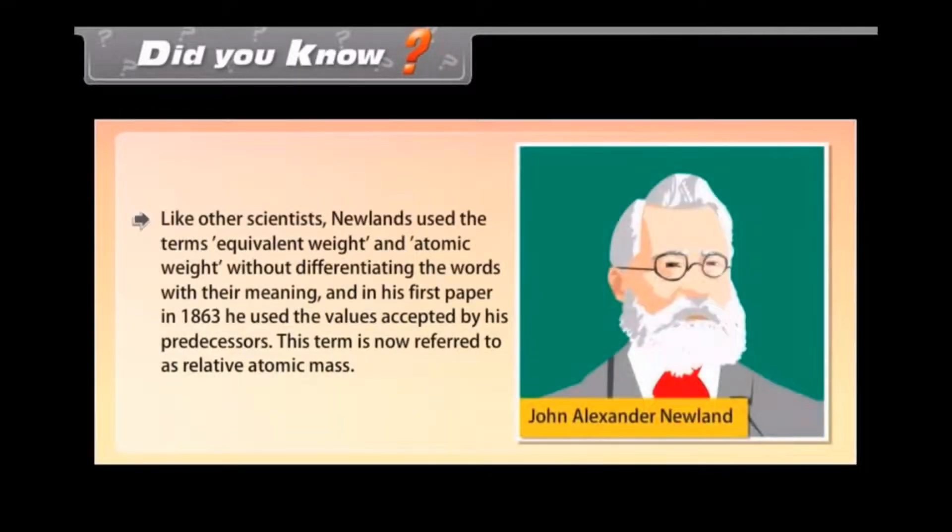Did you know? Like other scientists, Newlands used the terms equivalent weight and atomic weight without differentiating the words with their meaning. In his first paper in 1863, he used the values accepted by his predecessors. This term is now referred to as relative atomic mass.